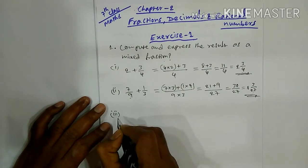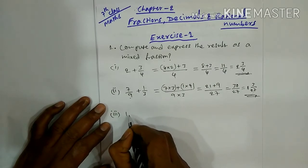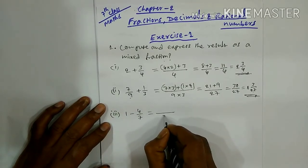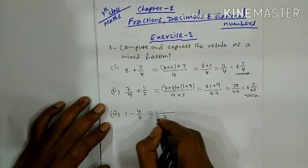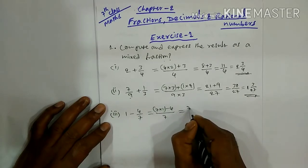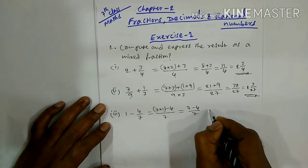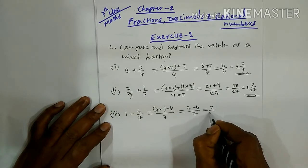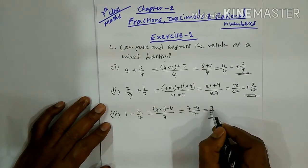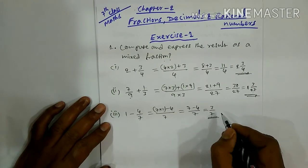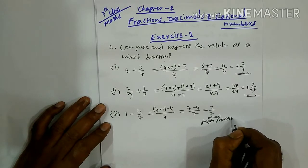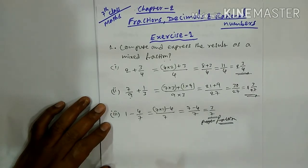Third bit: 1 minus 4 by 7. The LCM is 7. So 7 into 1 minus 4 equals 7 minus 4 by 7, which equals 3 by 7. Since the numerator is less than the denominator, this is a proper fraction and cannot be expressed as a mixed fraction.